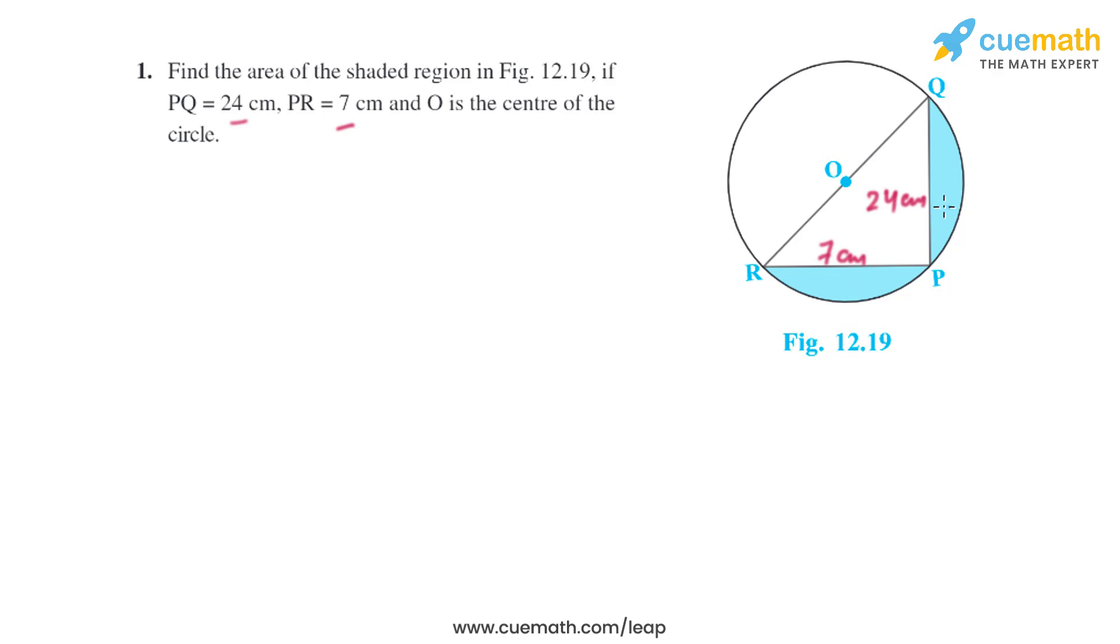As RQ is the diameter of the circle, angle P is 90 degrees. So if angle P is 90 degrees, we can use Pythagoras theorem. We have the length of RP, we have the length of PQ, so we can find the length of RQ using Pythagoras theorem.